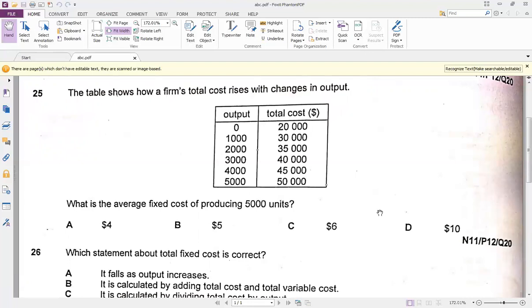So if we want to calculate average fixed cost, at zero if the total cost is 20,000, it means the fixed cost is going to be 20,000. And we know that the 20,000 is going to be the fixed cost at every output produced - even on 1,000 output, even on 2,000, even on 3,000, even on 4,000 and 5,000 - the total cost will remain 20,000.